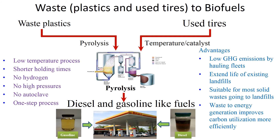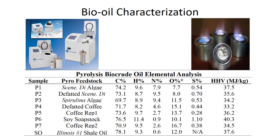All these bio-oils are then characterized using appropriate methods to upgrade them into biofuels. For example, elemental composition provides calorific values of these bio-oils, which vary from 33 to 37 megajoules per kilogram.